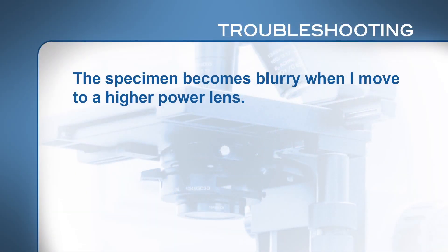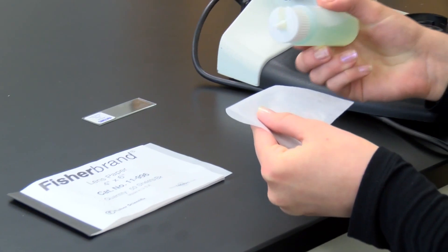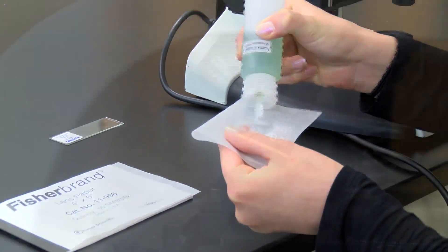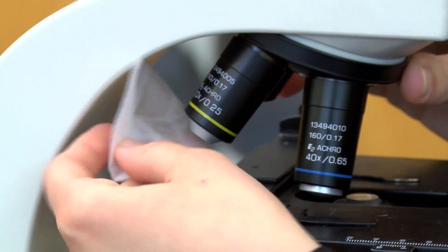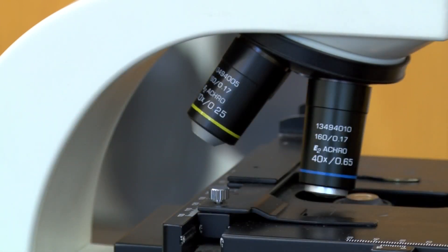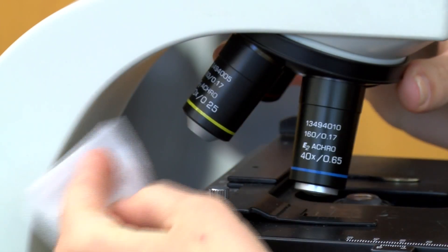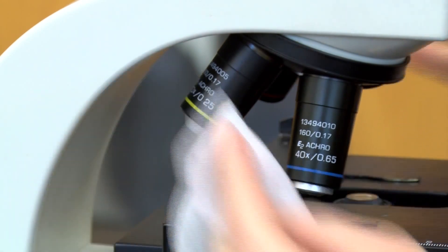If when you move to a higher power lens the specimen becomes blurry as though it were coated with Vaseline and you cannot focus, you may need to clean the lens. Soak a piece of lens paper — and only lens paper — with lens cleaner and wipe the lens. Then wipe dry with clean lens paper and repeat a couple of times. If this doesn't solve the problem, check with your instructor.